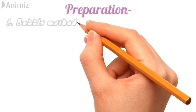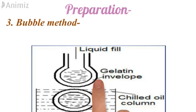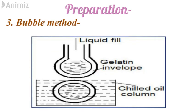The third technique is called the bubble method. In this, a concentric tube dispenser simultaneously discharges molten gelatin from the outer annulus and the liquid medicament from the inner tube. By means of a pulsating pump mechanism, the liquids are discharged from the concentric tube orifice into a chilled oil column as droplets consisting of a liquid medicament core within a molten gelatin envelope.